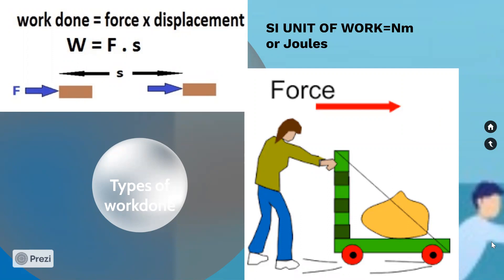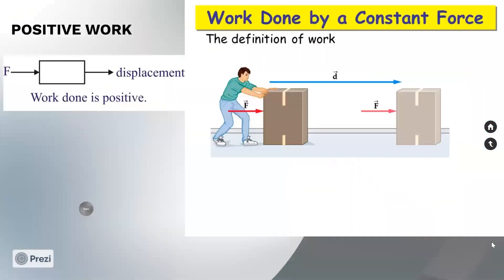Newton meter is the SI unit of work. One Newton meter represents a single unit of work and it is called a Joule. Now, if a box is pushed from left to right, the displacement is from left to right. So the direction of force and the direction of displacement are the same.